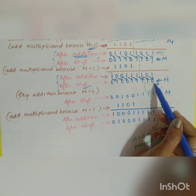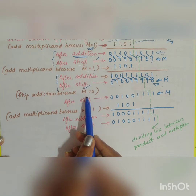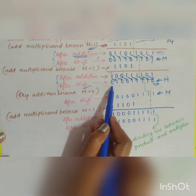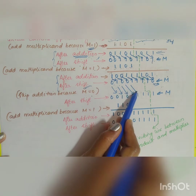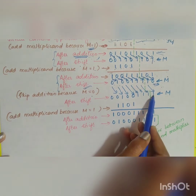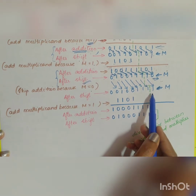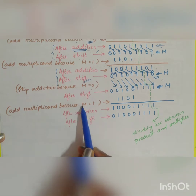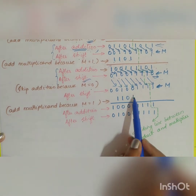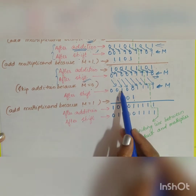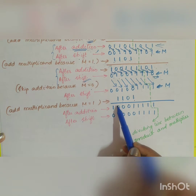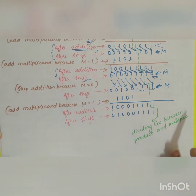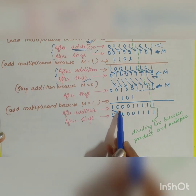The third multiplier bit is m = 0, so the add step is skipped and only a right shift is performed. The fourth and final multiplier bit is m = 1, so the multiplicant 1101 is added again: 0+1, 0+0, 1+1 gives carry, 1+0 with carry gives 1, producing intermediate result 10011. After this final addition, a right shift is performed once more.